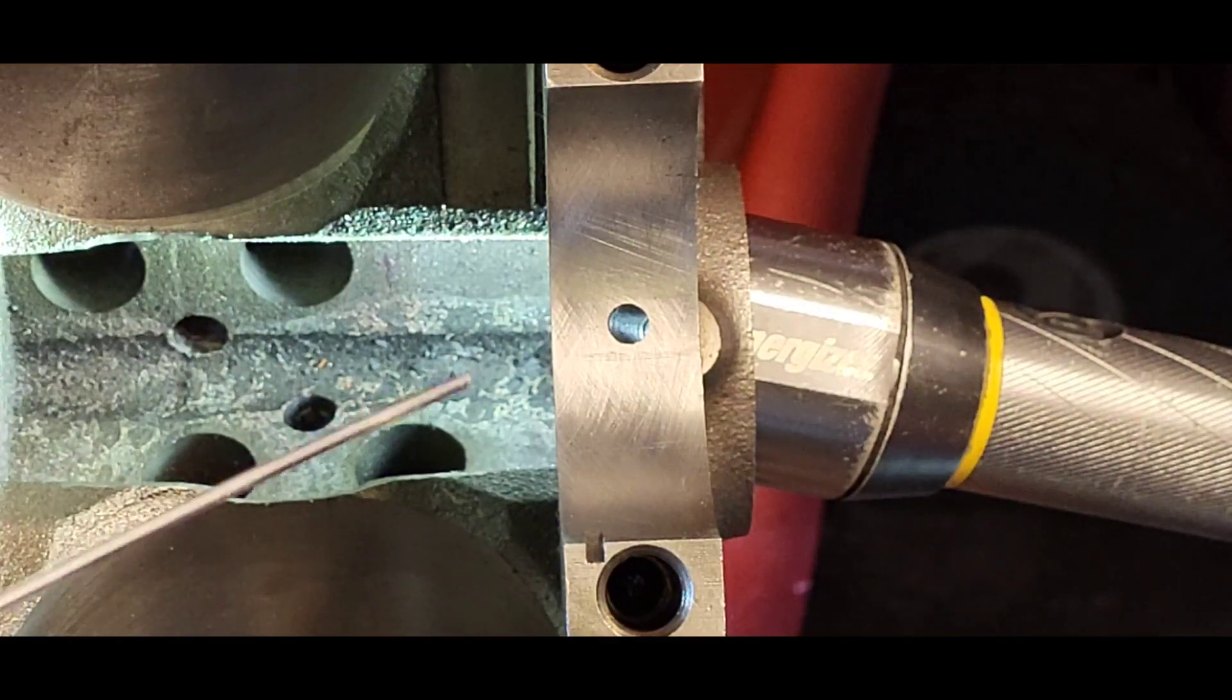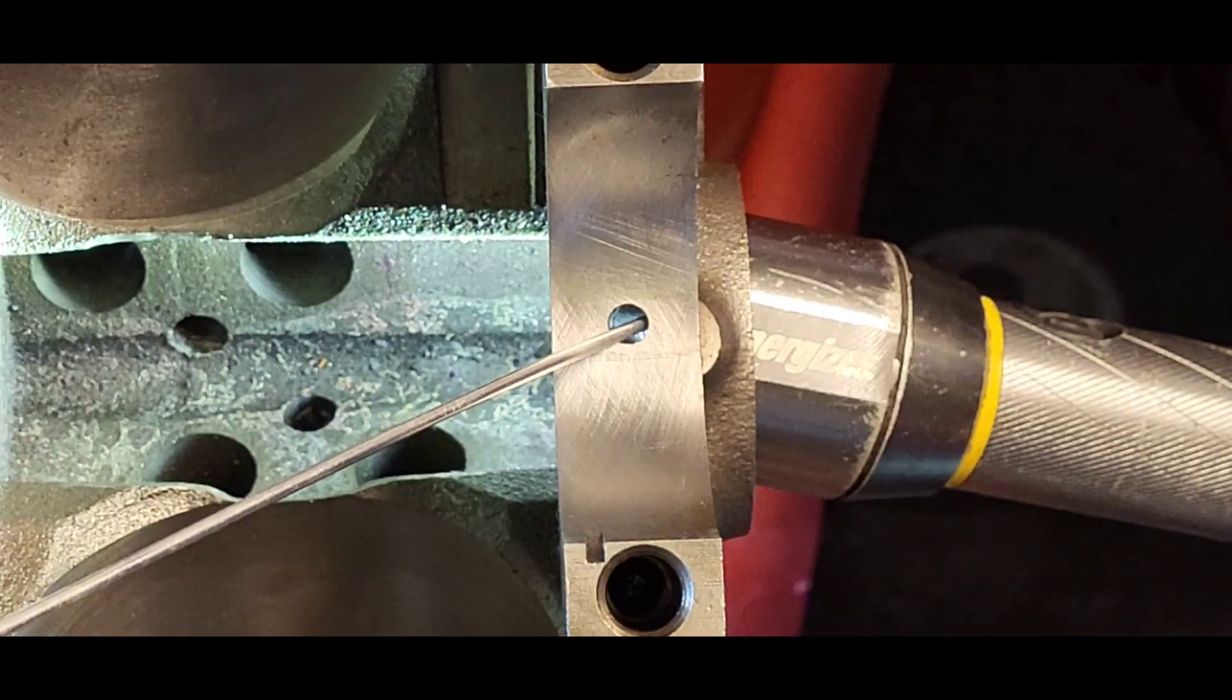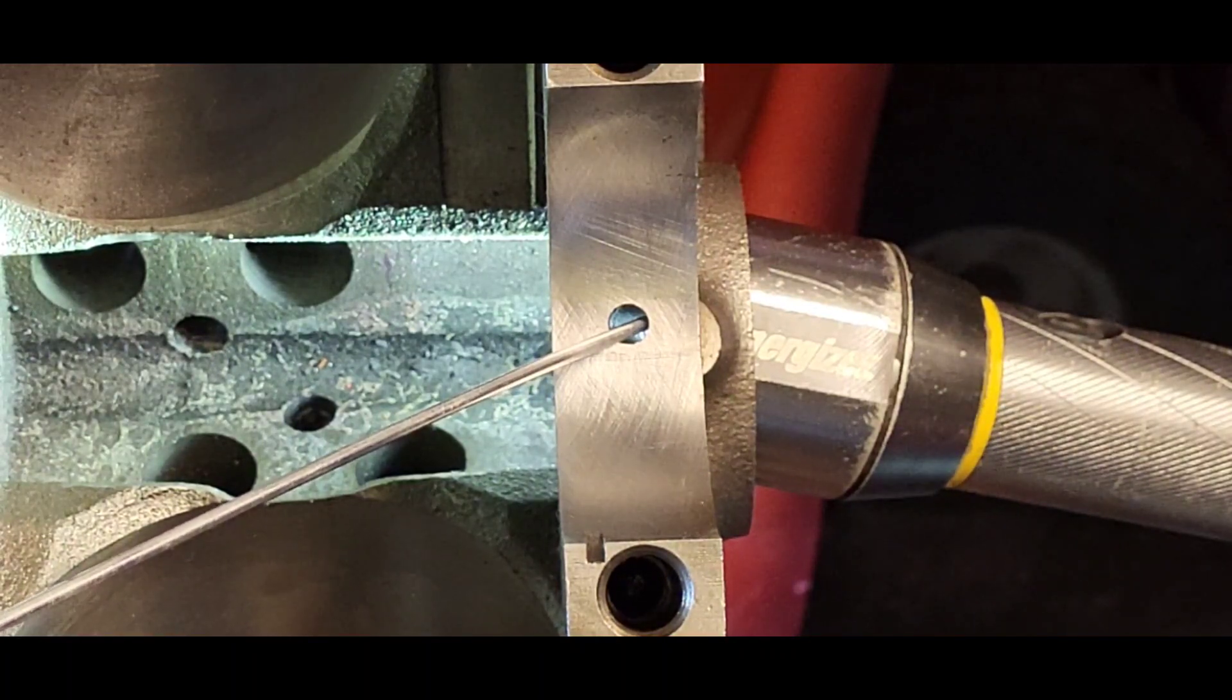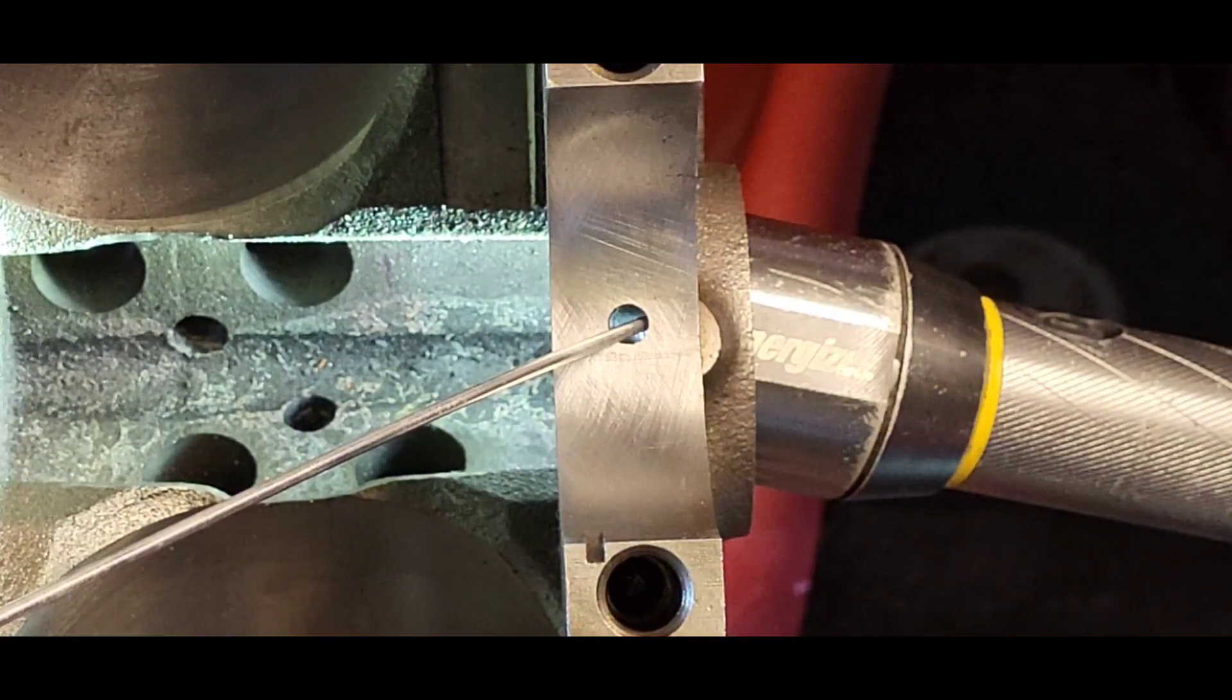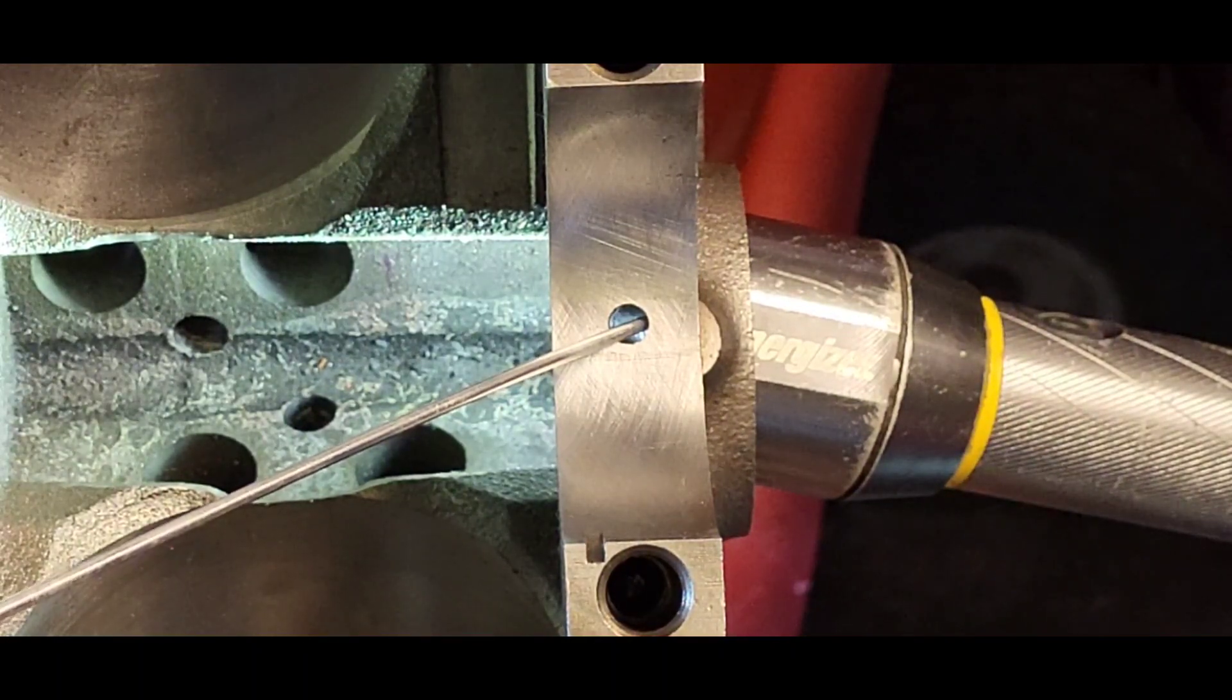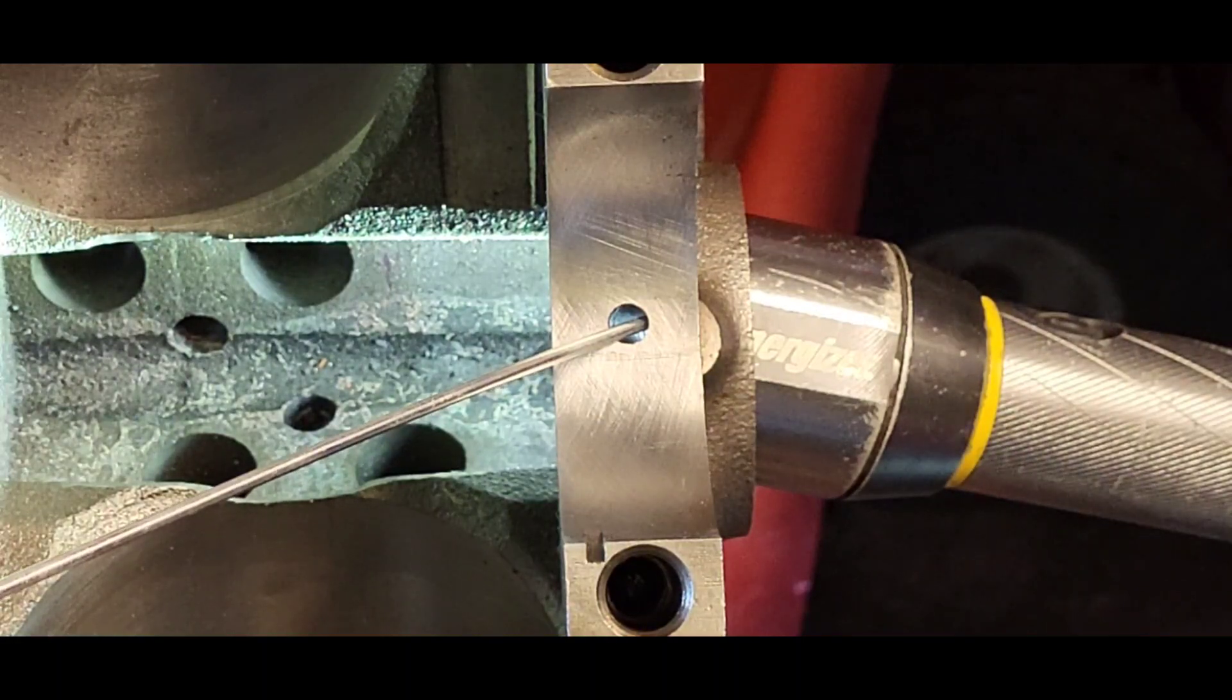The light you see shining up through this hole right here is from the number one cam bearing, but the bearing's not there. We took it out so we could check the pipe plug to make sure that it wasn't interfering.